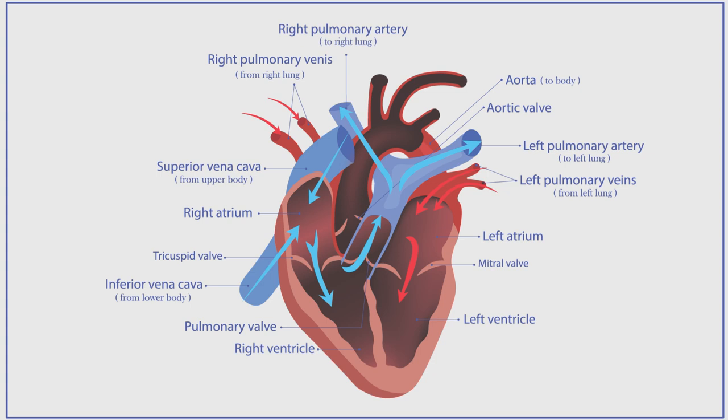The left ventricle pumps the oxygenated blood to the aorta and the rest of the body via the aortic valve. The aortic valve then opens to expel the oxygen-rich blood to the body.